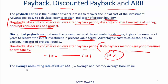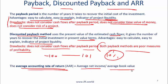The final metric, which is not overly important but covered for completeness, is the average accounting rate of return. Here, for a given project you figure out the average net income over a particular period and then divide by the average book value over that period.